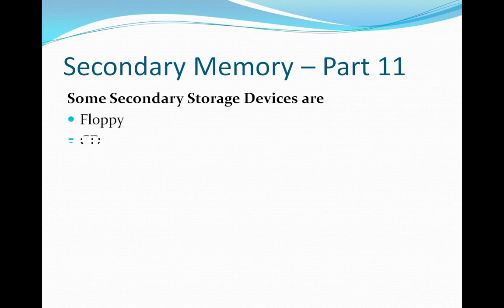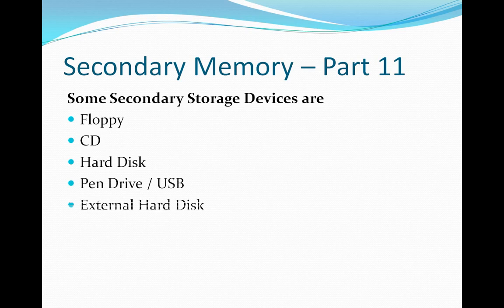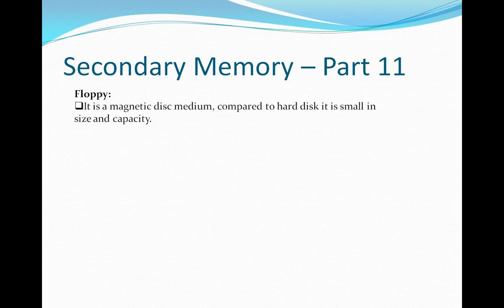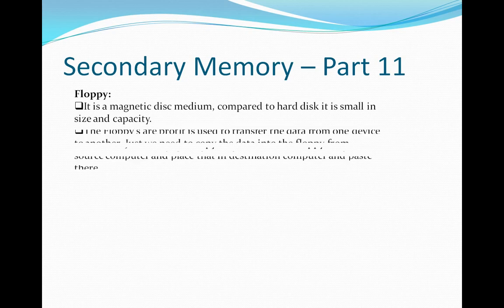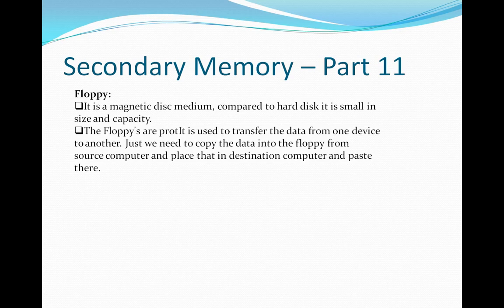The secondary devices include floppy disk, CD, hard disk, pen drive, USB, and external hard drive. The floppy was the first device introduced to store data externally. It is not much used nowadays. It is a magnetic disk medium — smaller in size compared to a hard disk. Floppies were used to transfer data from one device to another.